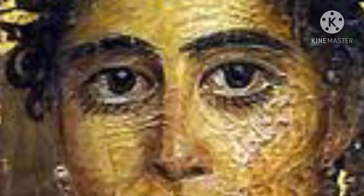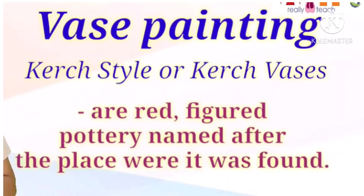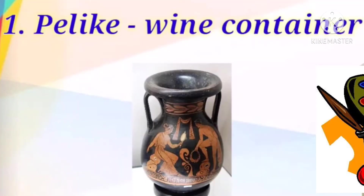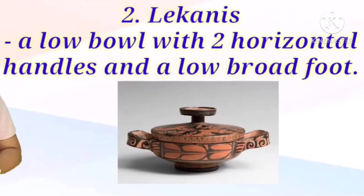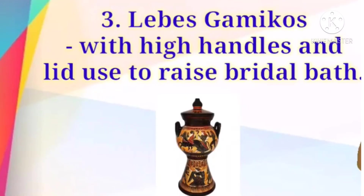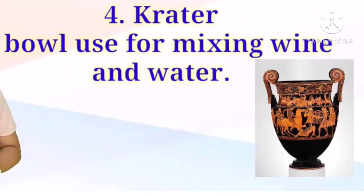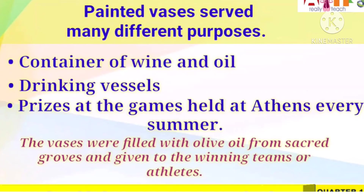To summarize: fresco is made up of ground powder pigments mixed in pure water, while encaustic is made with hot wax. Vase painting is also called the Kirk style or Kirk vases — a red-figured pottery named after the place where it was found. The shapes commonly found include the pilike (a wine container), the lecanis (a low bowl with two horizontal handles and a low broad foot), the gamicos (with high handles and a lid, used to raise bridal bath), and lastly the crater (a bowl used for mixing wine and water).